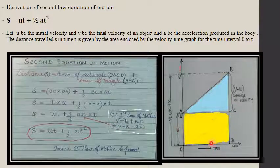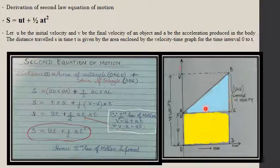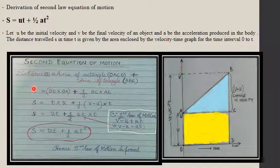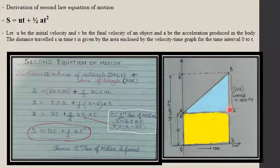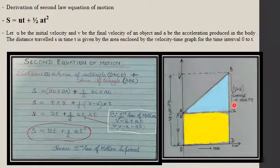You already know the area of a triangle formula: half into base into height. So, s equals area of rectangle plus area of triangle.